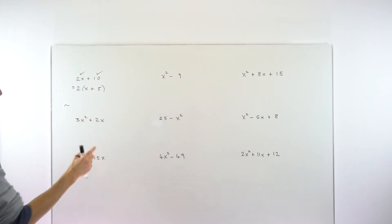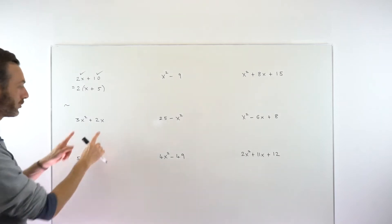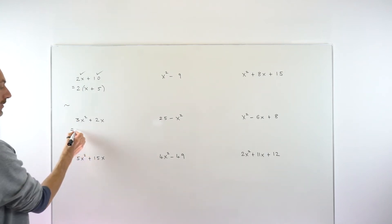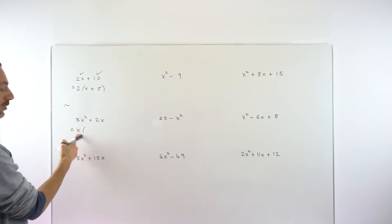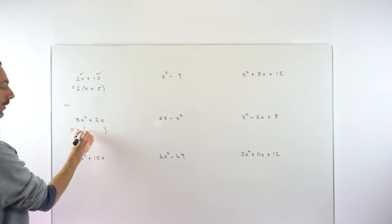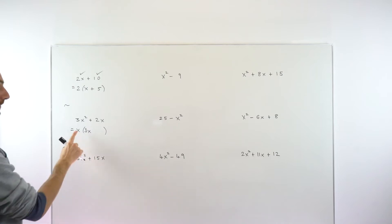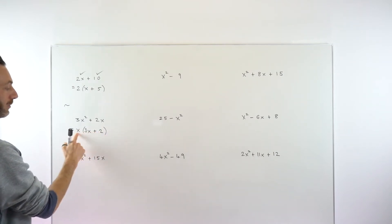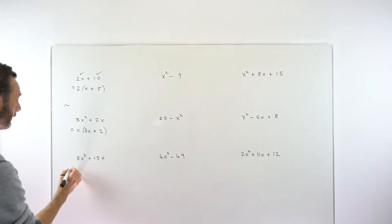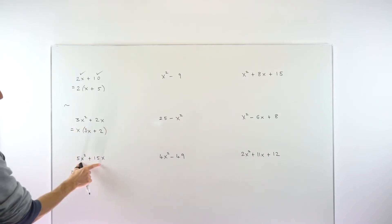Looking at the next example, there's no common factor between 3 and 2 numerically, but there is an x in both terms, so x is our highest common factor. Put x outside the bracket. Then x times 3x gives 3x², and x times 2 gives 2x, so the answer is x(3x + 2). In a slightly more complex example with 5x² + 15x, there's an x in both terms and 5 divides into both 5 and 15, so 5x is the highest common factor. The result is 5x(x + 3).